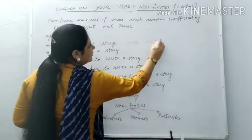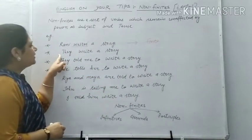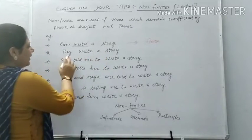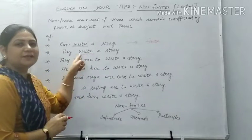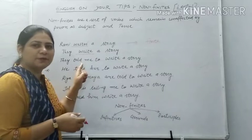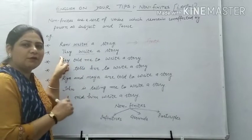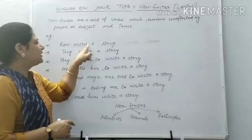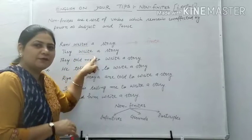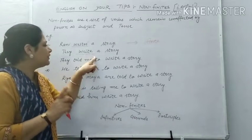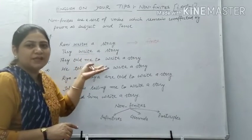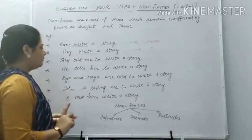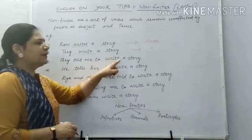The next example: 'They write a story.' Here 'write' is the verb. This is according to present tense and it is followed by a plural subject. With a plural subject, the S is dropped and we write only the first form of the verb — 'write.' So which type of verb is it? Again, it is a finite verb, it is not non-finite.